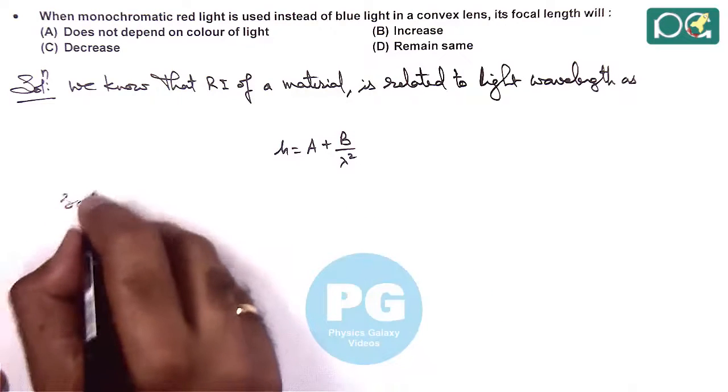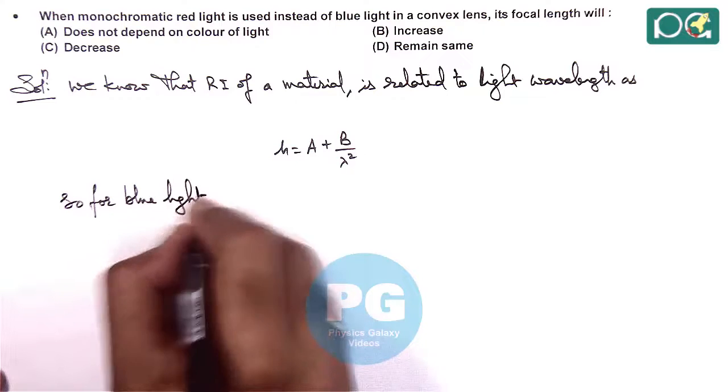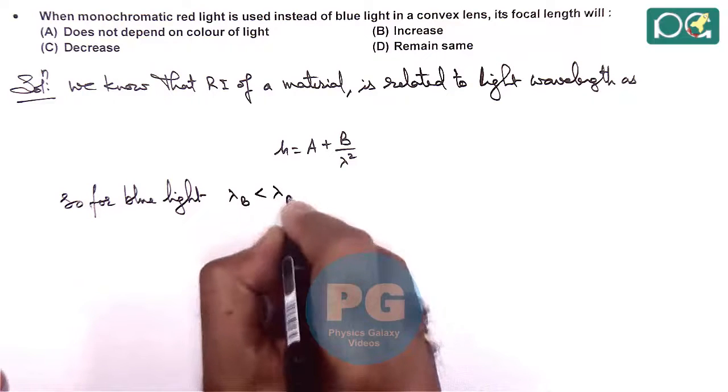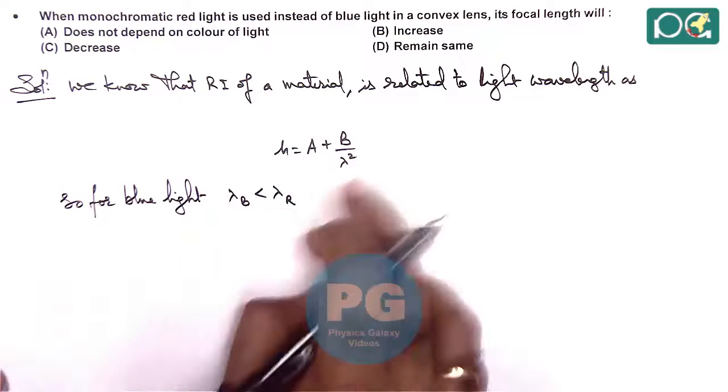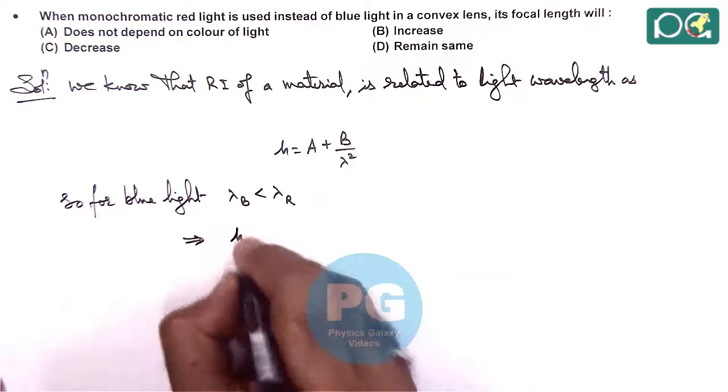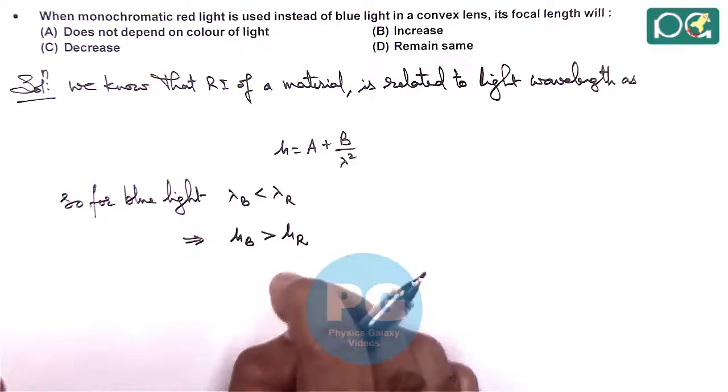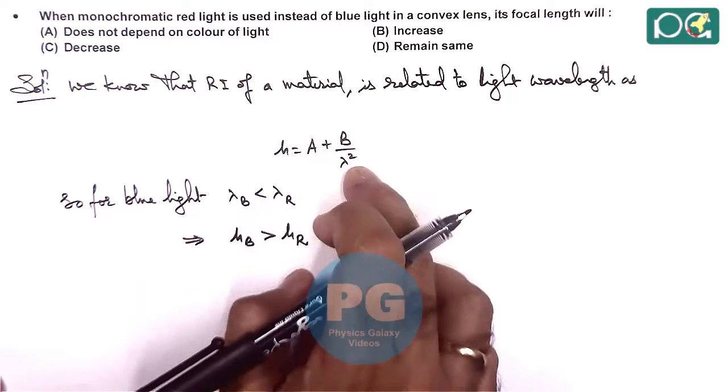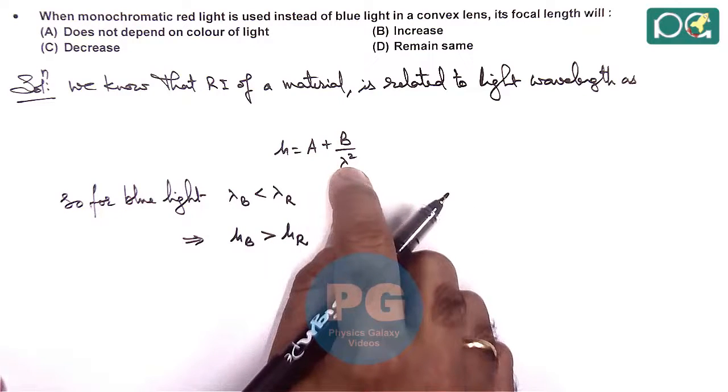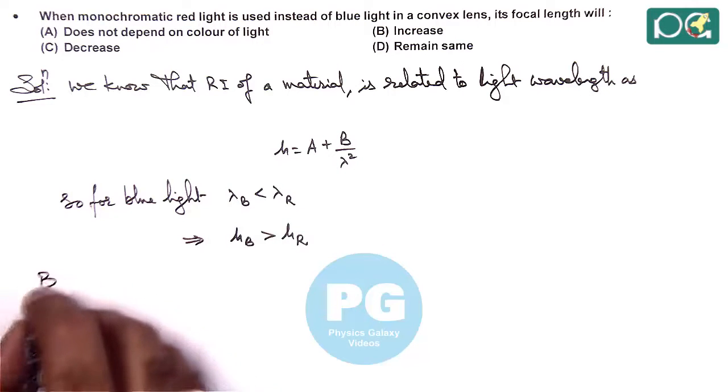When we talk about blue light, λ_blue < λ_red. So if wavelength is less, the refractive index will be more. This implies μ_blue > μ_red, as it varies with the inverse square of the wavelength. As wavelength decreases, the refractive index increases.